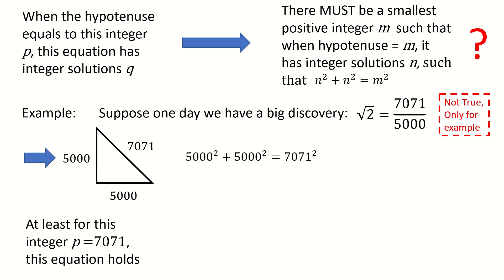Next, we just count down. Here we start from 7071, then we try 7070 to see if we can find integer solutions for x.